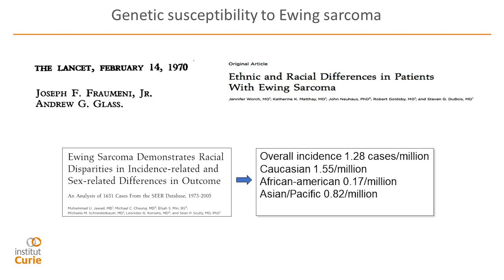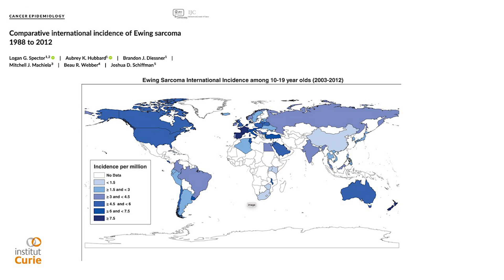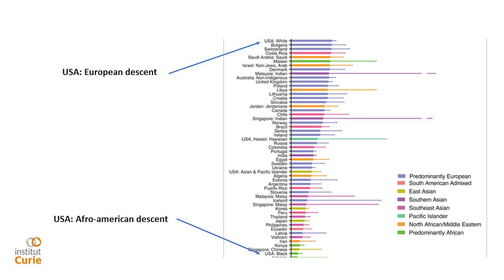Fraumeni described that Ewing sarcoma is almost only observed in populations of European descent. It is very rare in populations of African descent and intermediate in Asian descent. This has been well investigated recently by Logan Spector and George Schiffman looking at the epidemiology of Ewing sarcoma worldwide. In the US — the same environment — you have approximately 10 times more Ewing sarcoma in populations of European descent compared to Afro-American descent. This epidemiological profile strongly suggests some genetic factor predisposing to Ewing sarcoma.